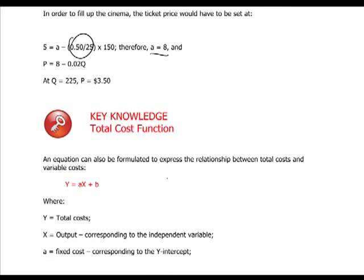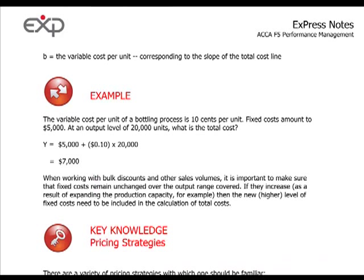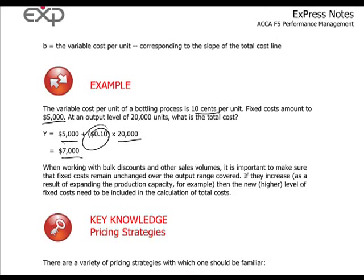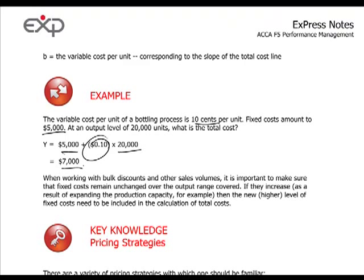The total cost function is expressed similarly as a straight line: Y is total cost, X is output quantity, A is fixed cost, and B is variable cost per unit. For example, if the variable cost per unit of a bottling process is 10 cents and fixed costs are $5,000, then at an output of 20,000 units the total cost is fixed costs plus 20,000 multiplied by the variable cost per unit, which equals $7,000.